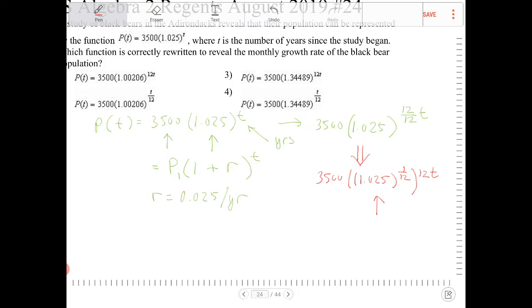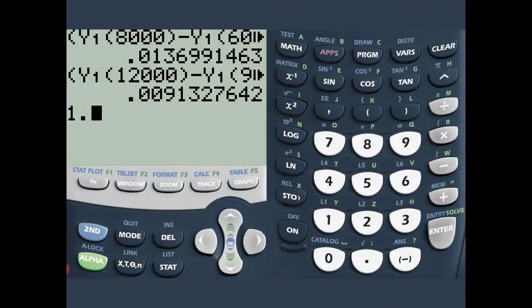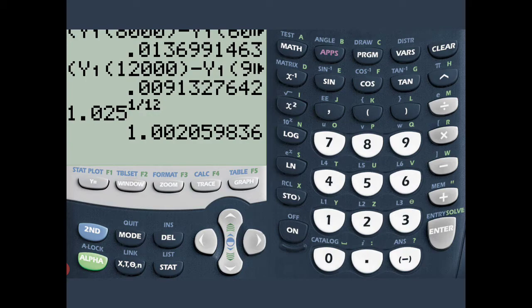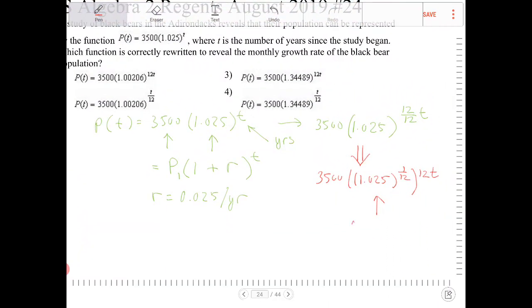So I take 1.025 and raise it to 1/12th. So let's take a look. 1.025 to the 1/12th, and that would be 1.00206. So this would be 1.00206 to the 12t.